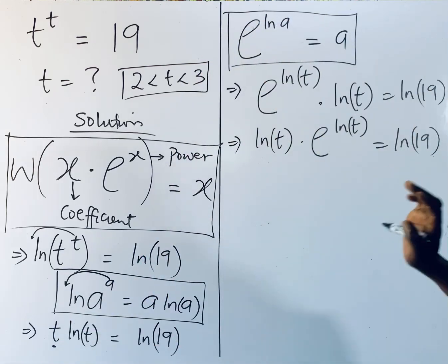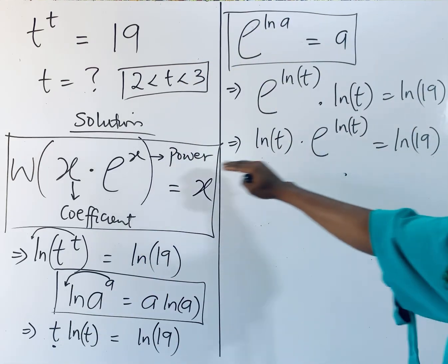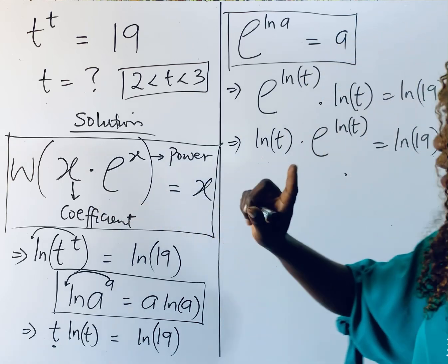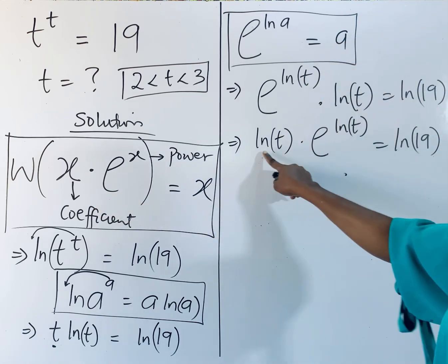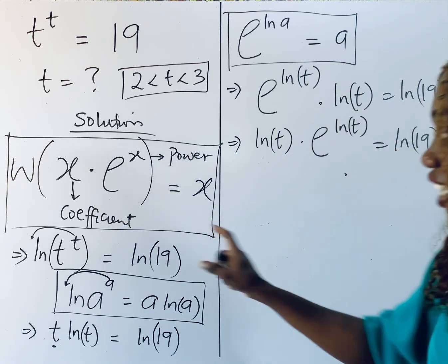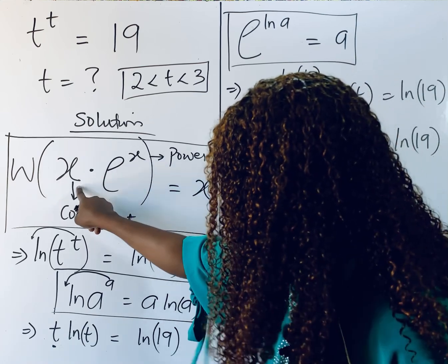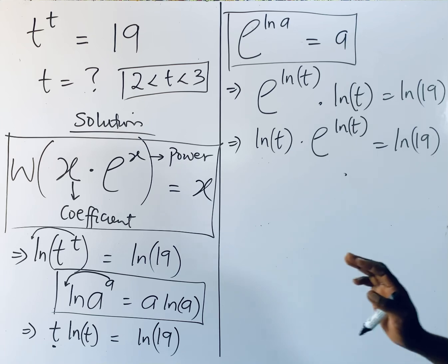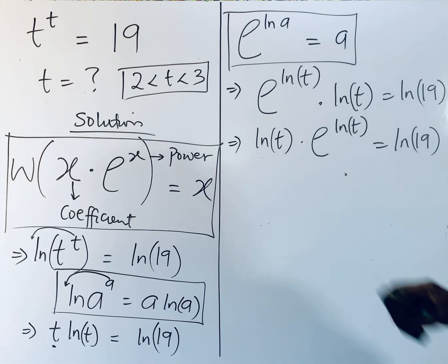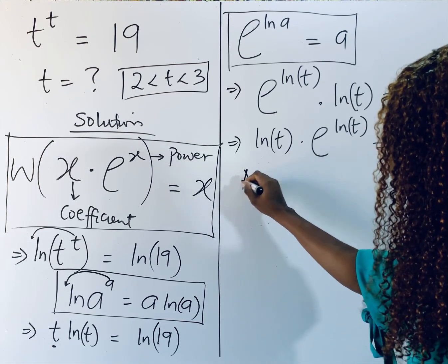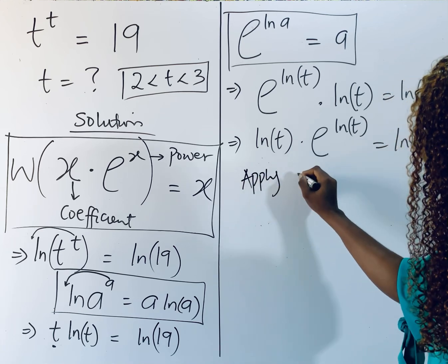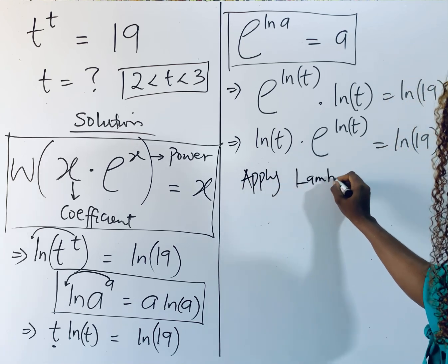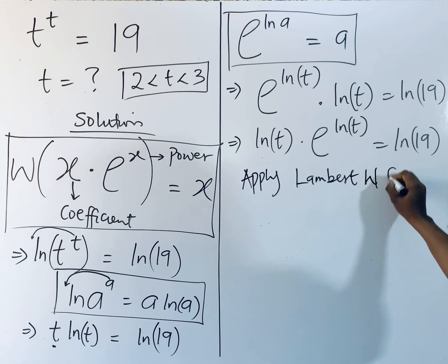So what do we do? You observe that this is of this form. Just watch carefully: the power and the coefficient are the same. And that is what we have explained for us to make use of our Lambert W function. So if this is true, we can apply it. So in that case, applying the Lambert W function.